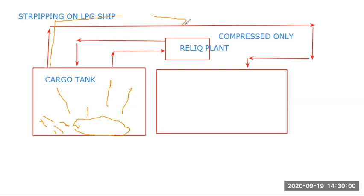The vapors are collected in this one tank. The vapor from the tank is taken into the reliquefaction plant and it's only compressed. The condenser and expansion is not used, they're bypassed and only compression is done.